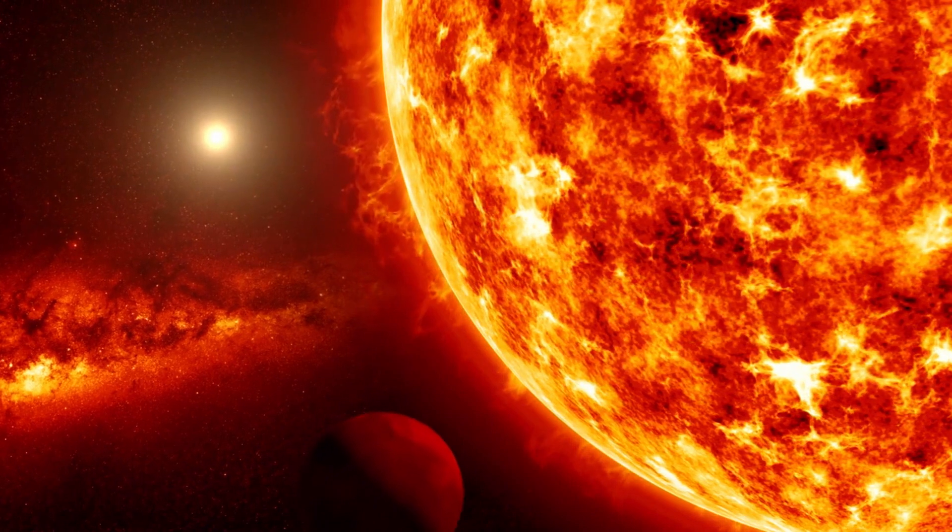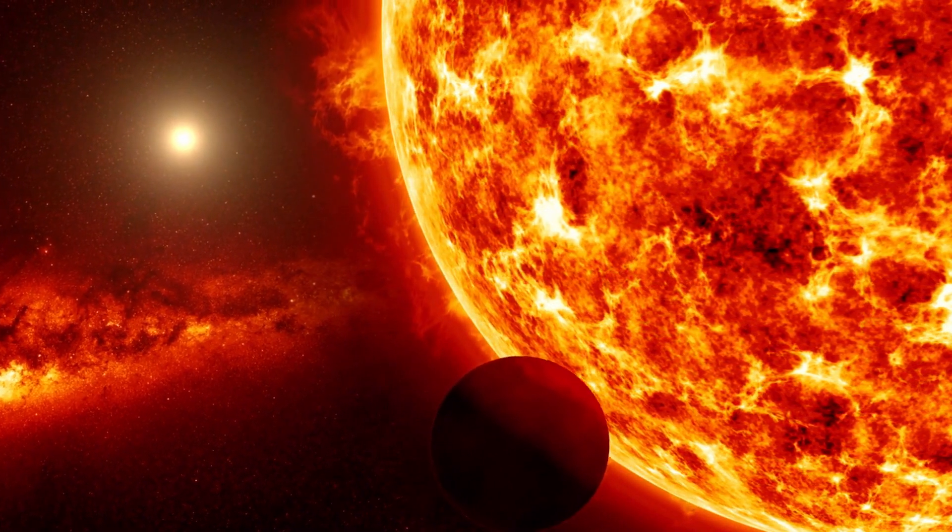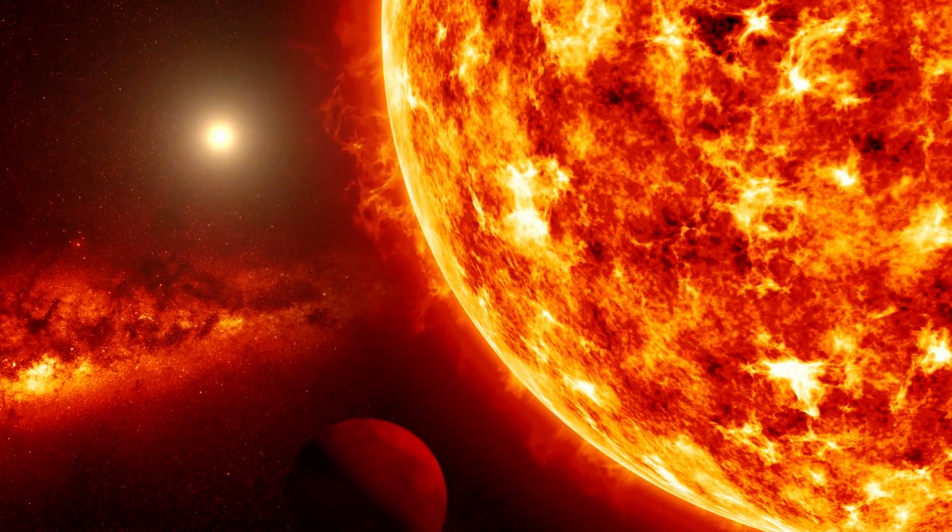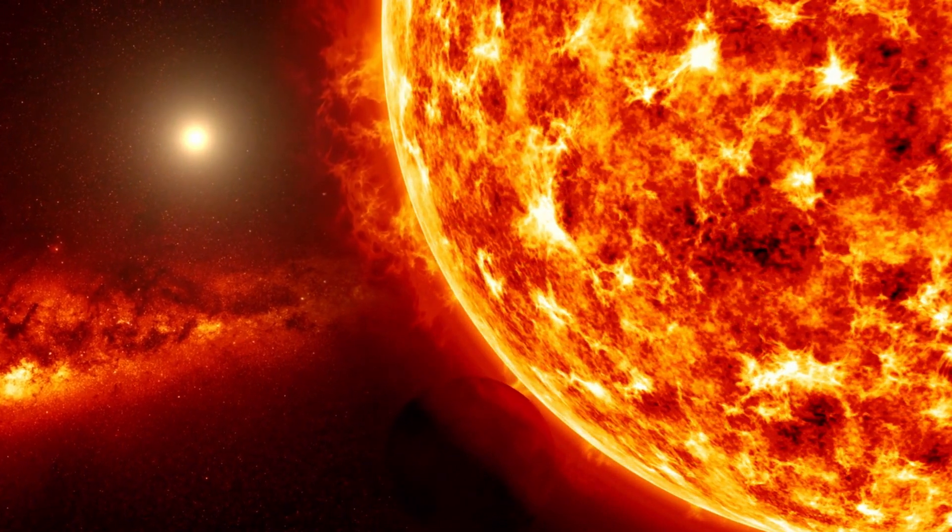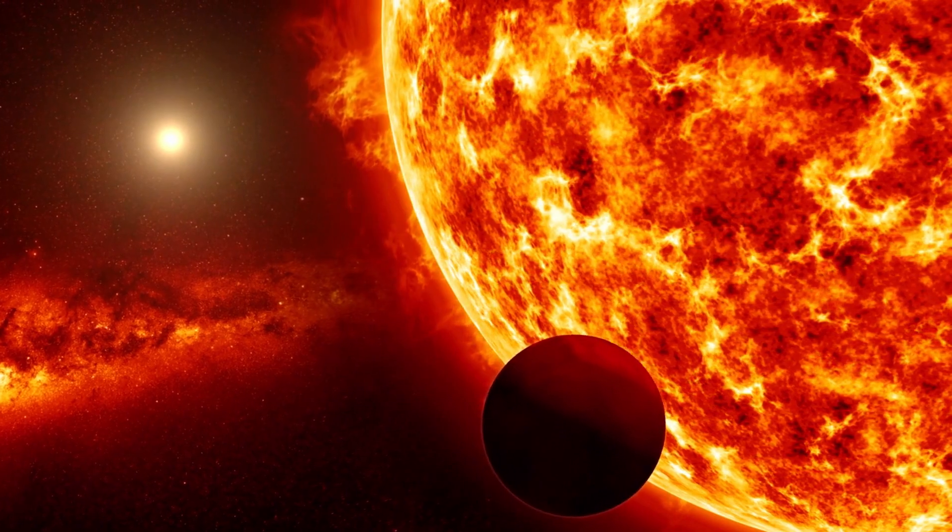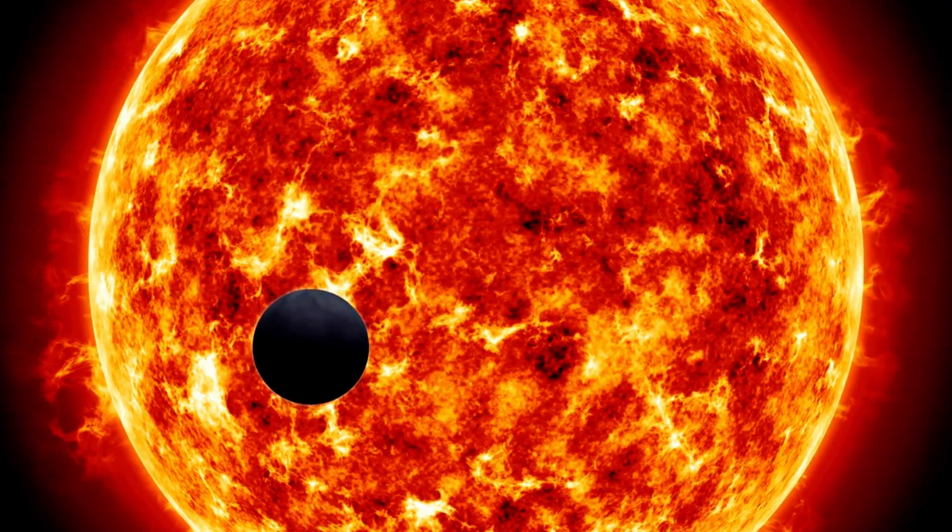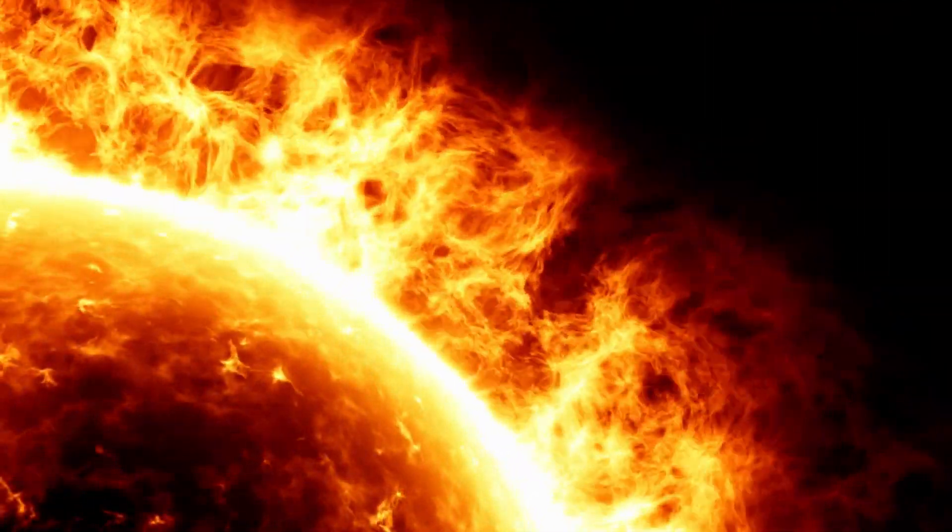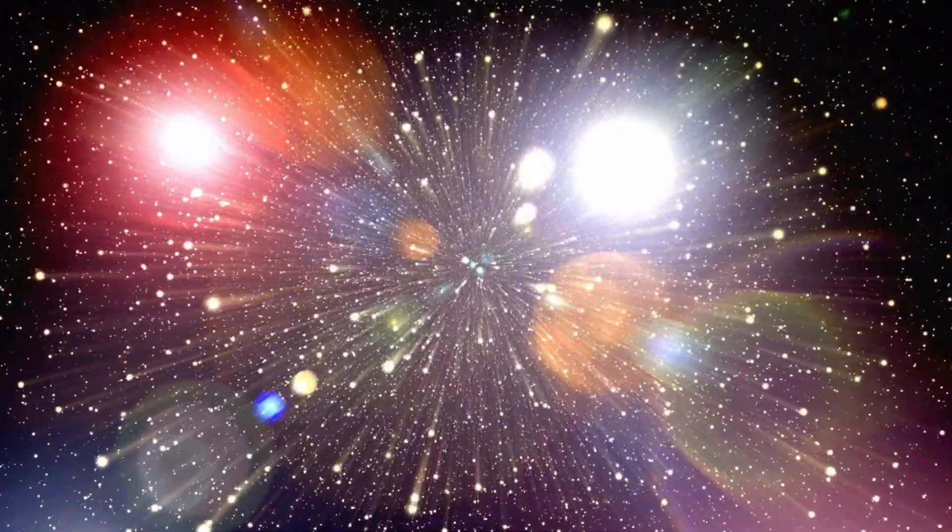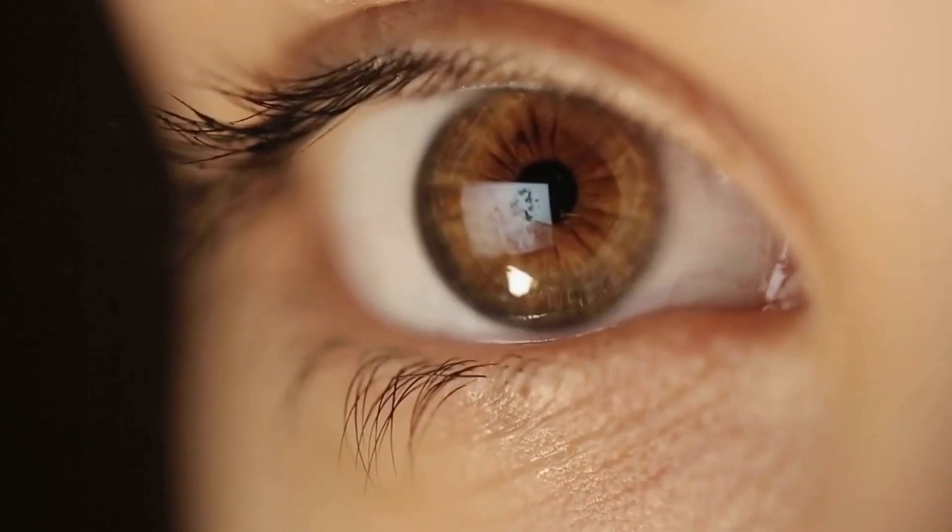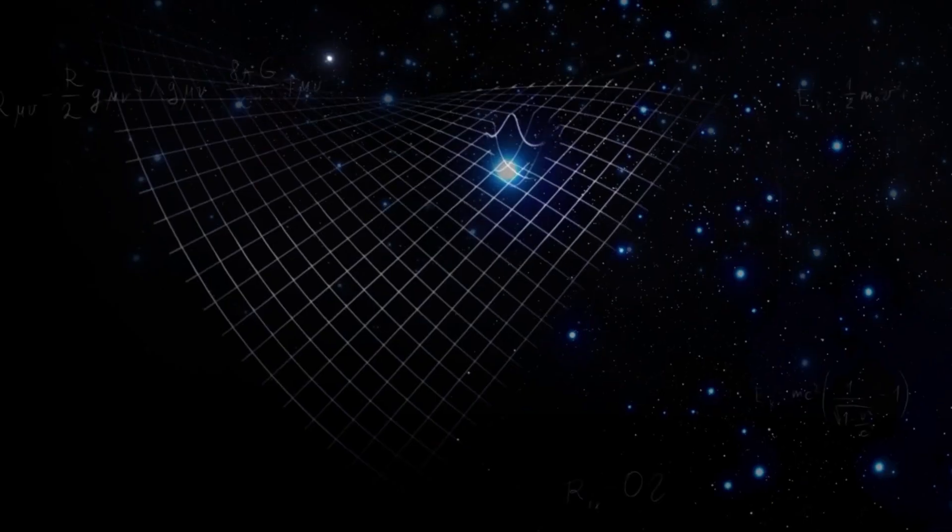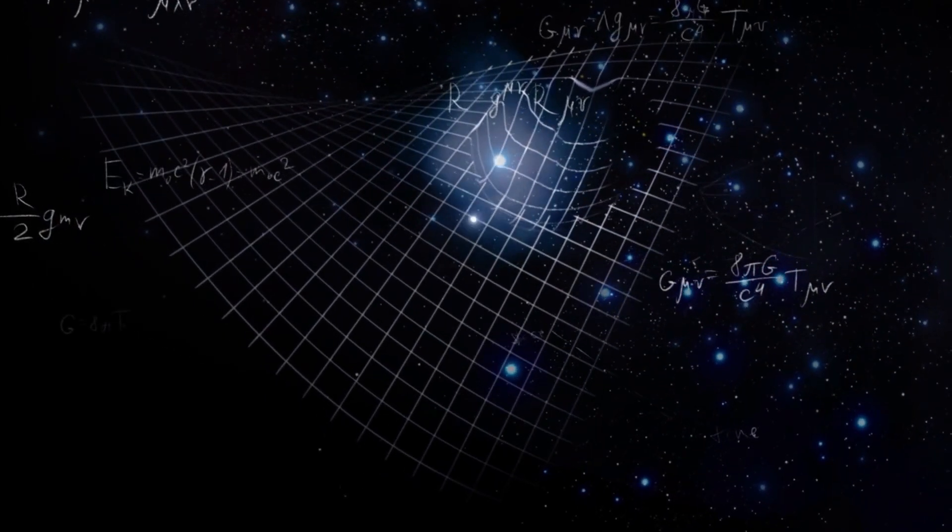K2-18b, this exoplanet is about 8.6 times heavier than our good old Earth. It's like the big brother of the planet family, but it dances around a cooler, smaller star called K2-18, which is one of those red dwarf stars. They might not be as flashy as our sun, but they have their own charisma. These stars can be a bit feisty, throwing stellar flares every now and then. Speaking of distance, K2-18b isn't exactly our next-door neighbor. It's a whopping 124 light-years away. That means the light we're seeing from it today actually started its journey to our eyes 124 years ago.